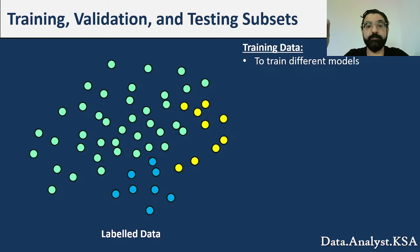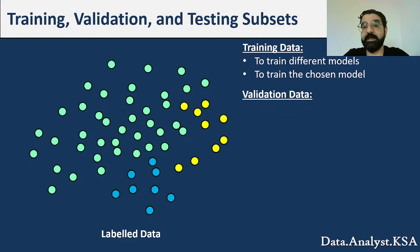Some notes about these subsets: the training data is used to train the different models, to train the chosen model eventually. After I decide what is the best model, I'm going to be able to train it with that training data. The validation data, on the other hand, is used to enhance the model or even choose the best model.